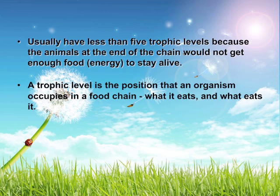Food chains usually have five trophic levels, because every time you go up a trophic level, the energy is decreased by 10%, so organisms won't have enough energy to stay alive. A trophic level is the position that an organism occupies in a food chain — what it eats and what eats it.